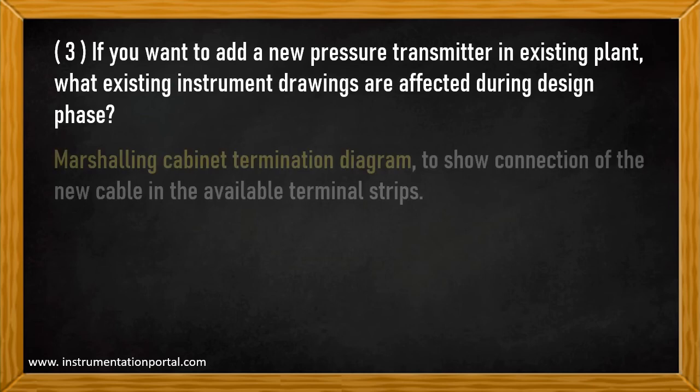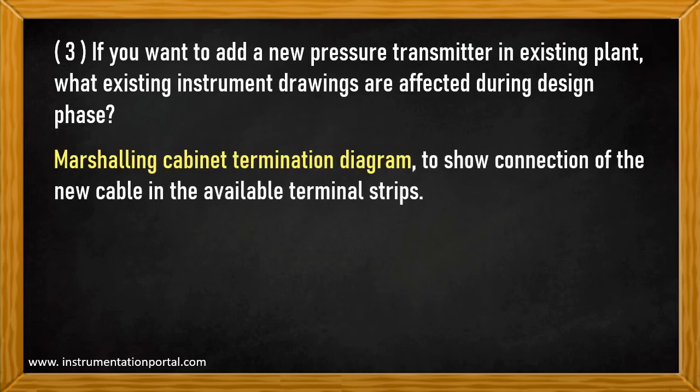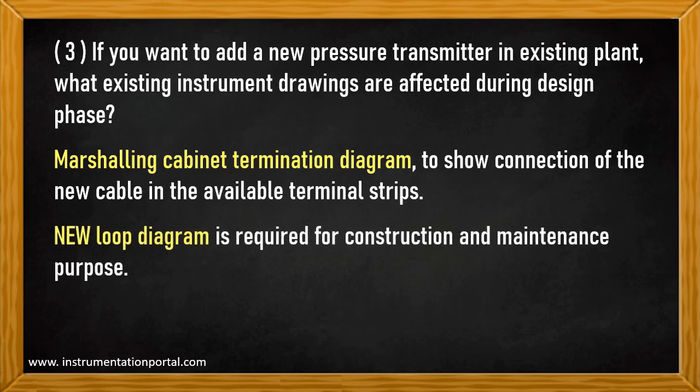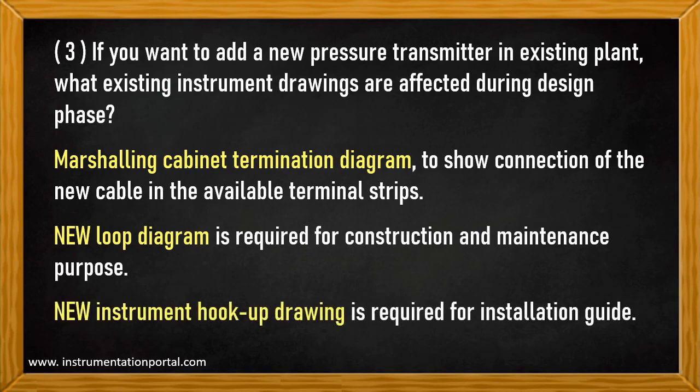The marshaling cabinet termination diagram must be updated to show the connection of the new cable and the available terminal strips. Besides updating existing drawings, new drawings must also be produced: a new loop diagram is required for construction and maintenance purposes, and a new instrument hookup drawing is required as an installation guide.